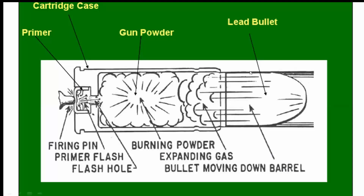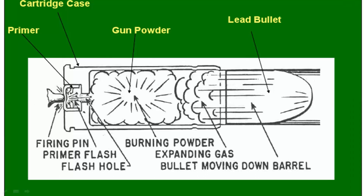As you can see in the diagram, this is ammunition which consists of a cartridge case. At the base of the cartridge case there is a primer, propellant, and bullet. When you pull the trigger, the hammer with the firing pin crushes the primer. The primer ignites, burns, and flashes, passing down to the propellant or gunpowder. Gunpowder burns, gases are produced, and because of this pressure of the gases, the bullet is propelled forward.